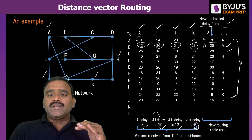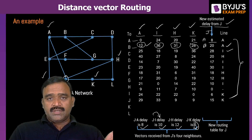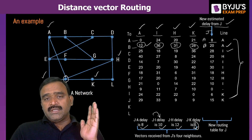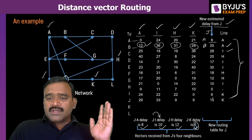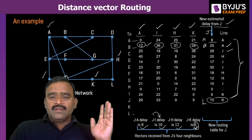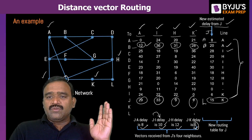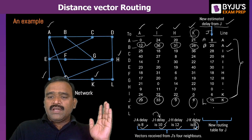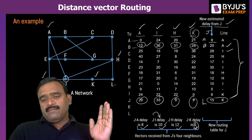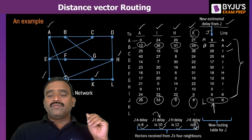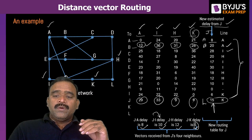For J to L, going via A gives 29 plus 8 = 37; via I gives 33 plus 10 = 43; via H gives 9 plus 12 = 21; via K gives 9 plus 6 = 15. The minimum is 15, so J chooses to go to L via K — that means J to K then K to L, with a total cost of 15. This is how we update routing tables by taking information from neighbors. The vectors received from J's four neighbors A, I, H, K are used to build the updated routing table for J.